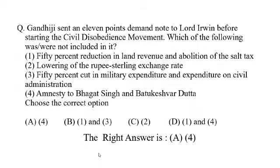1. 50% reduction in land revenue and abolition of the salt tax. 2. Lowering of the rupee-sterling exchange rate. 3. 50% cut in military expenditure and expenditure on civil administration. 4. Amnesty to Bhagat Singh and Batukeshwar Dutt.